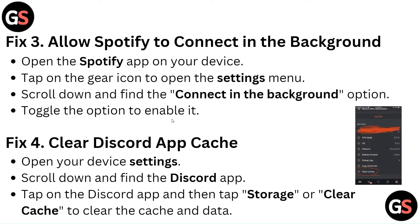Fix 3: Allow Spotify to connect in the background. Open the Spotify app on your device, tap on the gear icon to open the settings menu, scroll down and find the connect in the background option, and toggle the option to enable it.